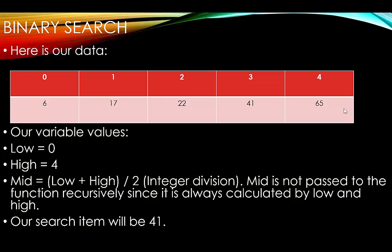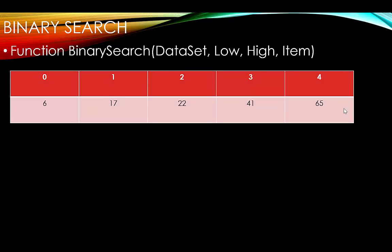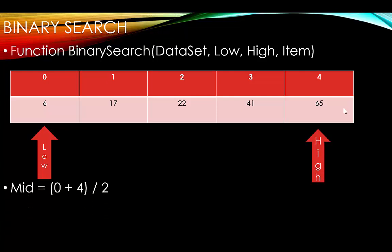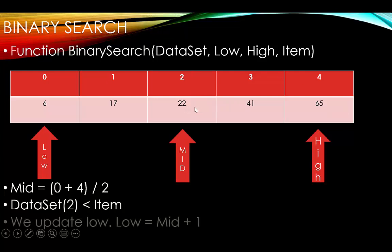Our function binary search takes a data set, low, high, and the item we're looking for. Low is 0, high is 4. We calculate mid: 0 plus 4 divided by 2 is 2, so mid is set to index 2. We compare our search item 41 with data set index 2, which is 22. Since 22 is less than 41, we update low to mid plus one, which is 3.